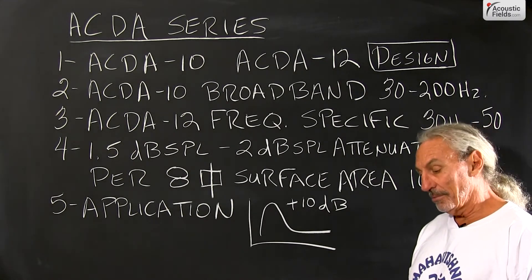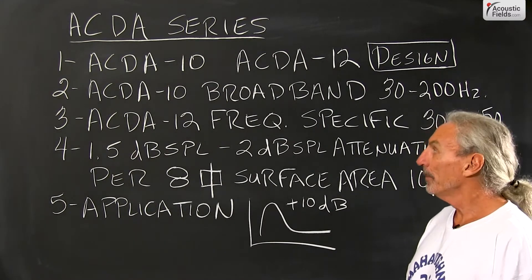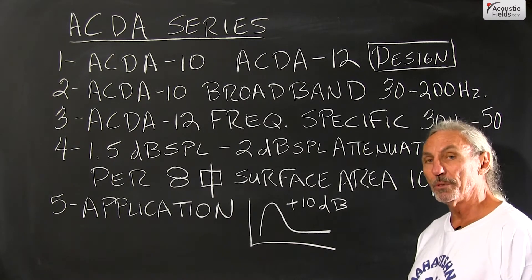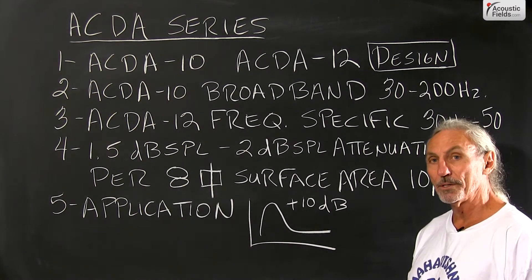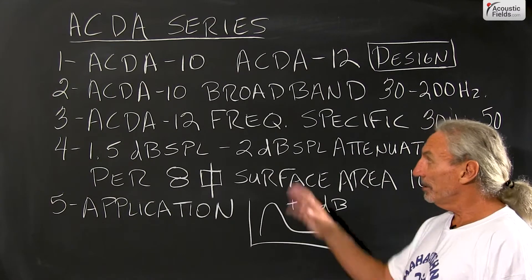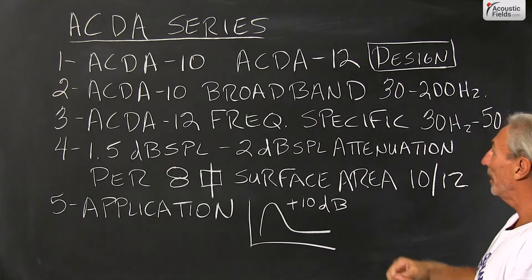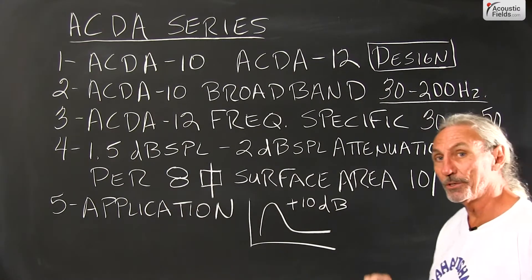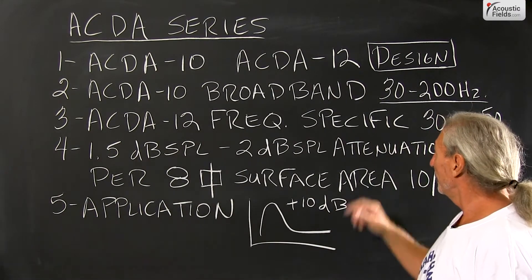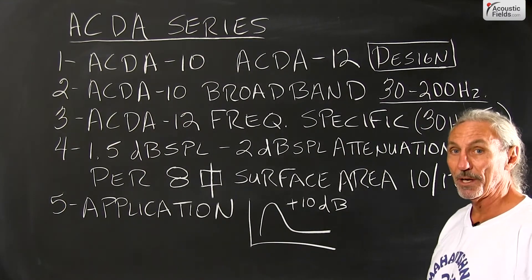It's calculated — we can calculate the rate and level of absorption with a formula. I started looking at those formulas and the rooms I was designing and measuring, and I started to see two types of problems: a broadband problem from 30 to 200 Hz, which almost all rooms had, and a really frequency-specific problem from 30 to 50 Hz.